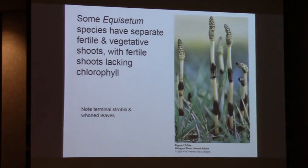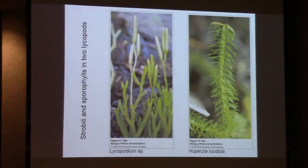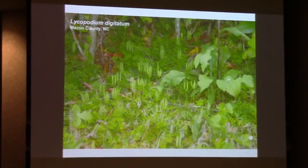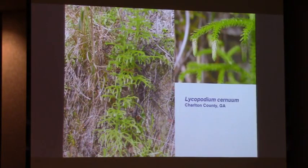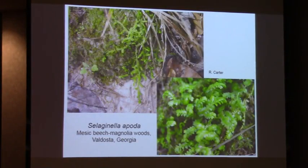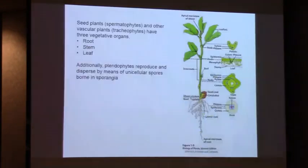The horsetail ferns have cone-like clusters arranged at the ends of the stem. And of course we've got Lycopodium and its relatives - they've got cone-like structures. Some have highly organized strobili, and some have sporangia associated with leaves. This is Lycopodium alopecuroides, which occurs commonly here in the flatwoods in southern Georgia. And we've got the spike-mosses: Selaginella rupestris, and Selaginella apoda, which occurs in mesic woods here in the coastal plain.